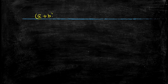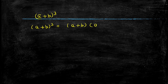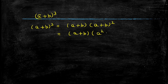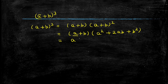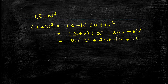The first one we are going to try out is a plus b the whole cube. I am going to split it as a plus b into a plus b the whole square. Now I will write a plus b as such and expand a plus b the whole square using the identity a square plus 2ab plus b square. Then we get a into a square plus 2ab plus b square, plus b into a square plus 2ab plus b square.